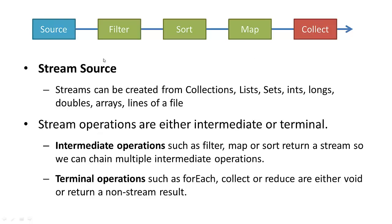A stream source can come from collections, lists, sets, arrays of ints, longs, doubles, strings, whatever. Stream operations are either intermediate or terminal. Intermediate operations like filter, map, and sort return a stream, so that the next intermediate operation receives a stream. You can chain multiple intermediate operations because each one is passing a stream onto the next. Terminal operations receive a stream and they can either return void or a non-stream result — typically a reduction — they can reduce your items to a list or to a scalar value or something else.